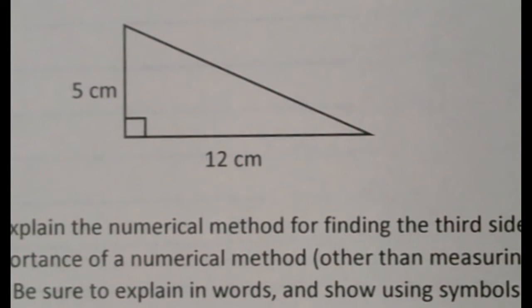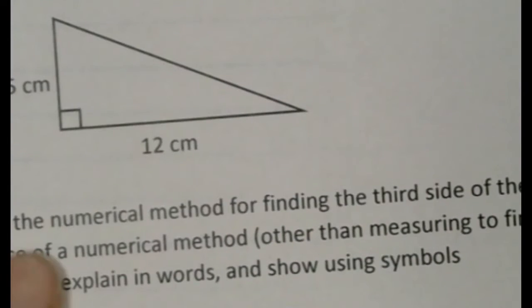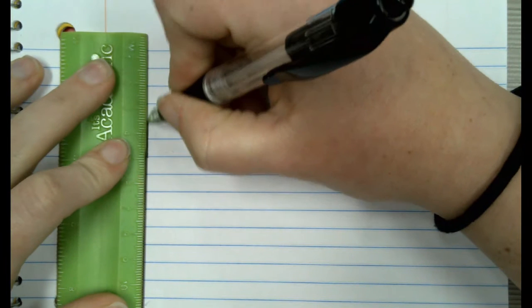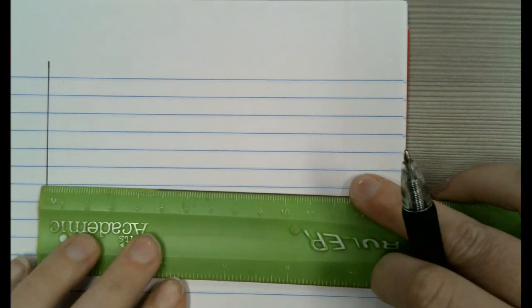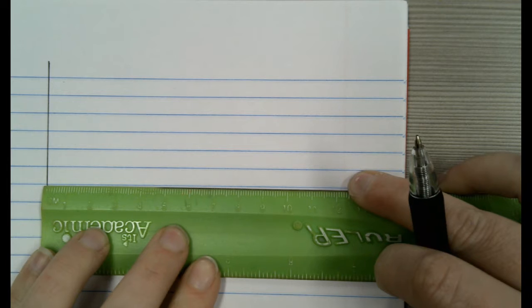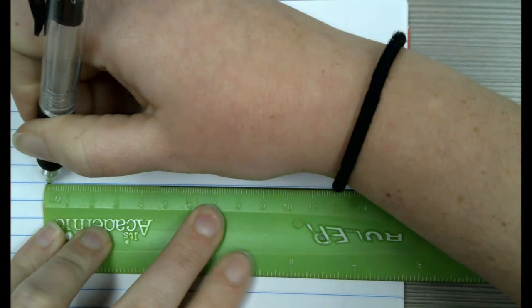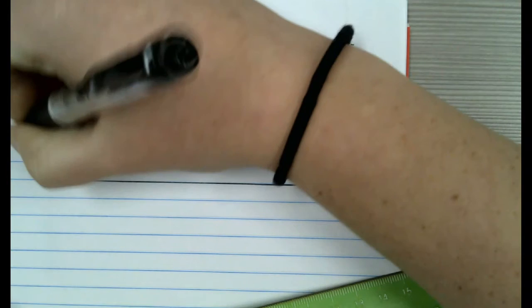So if you have a ruler and you are able to do this, you can. I'm going to go ahead and draw this triangle. I want a side that is 5 cm long. I'm going to start by drawing a side length that is 5 cm long. And then I'm going to draw my other side so that this is a right angle and it's going to be 12 cm long. So this one is 5 cm, this one is 12 cm, and this is a right angle.